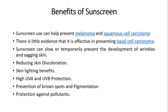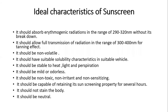The benefits of sunscreen include: it can prevent melanoma and squamous cell carcinoma, though there is little evidence it is effective in preventing basal cell carcinoma. Sunscreen can slow or temporarily prevent the development of wrinkles and sagging skin, reduces skin discoloration due to tanning, provides high UVA and UVB protection, prevents bronze spots and pigmentation, and offers protection against pollutants.